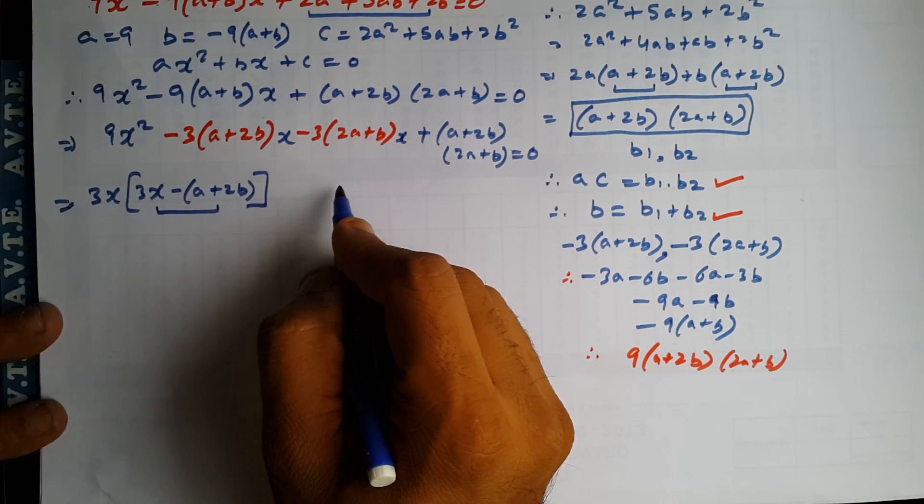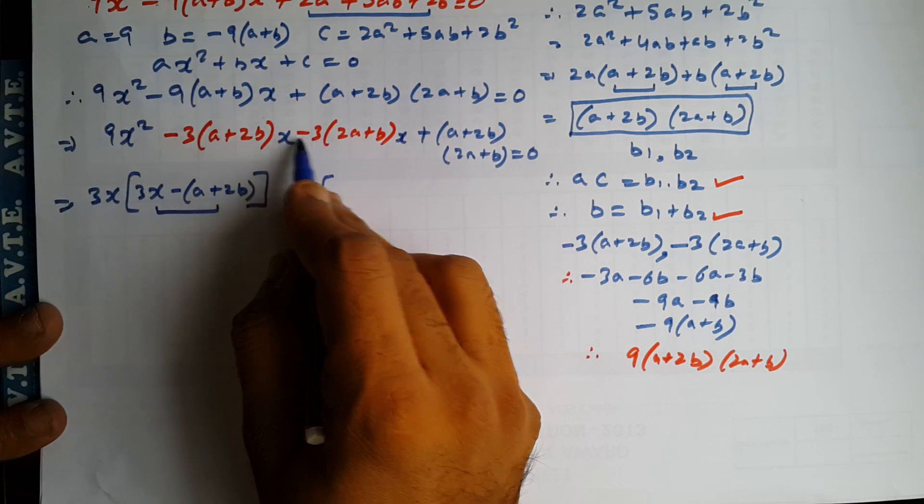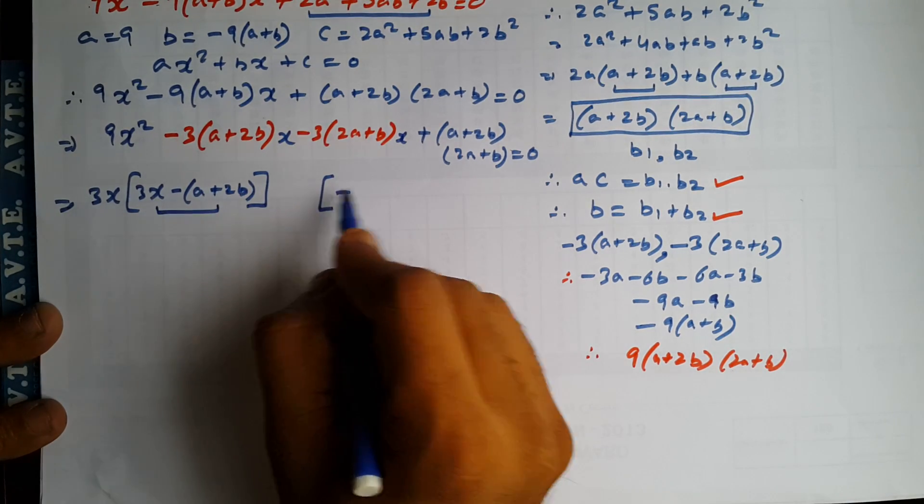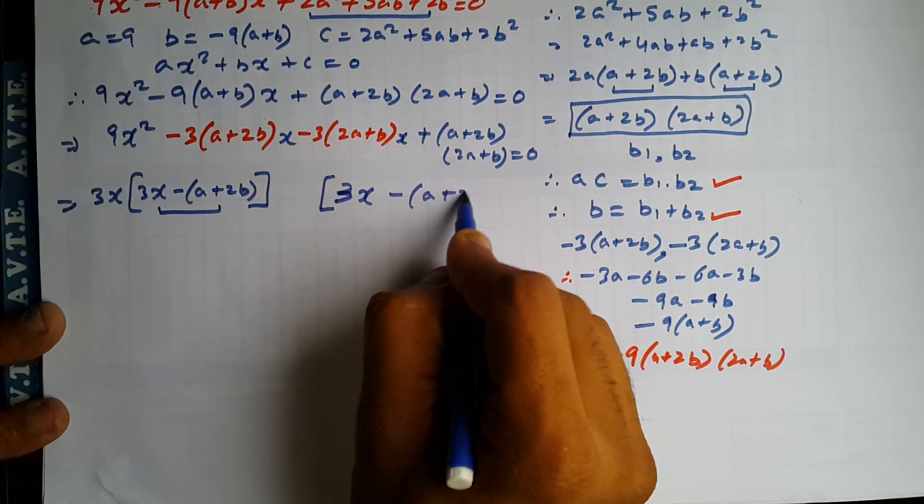Because if you take 2A plus B common, you'll get minus 3X, sorry, plus 3X. The same factor. And minus A plus 2B.